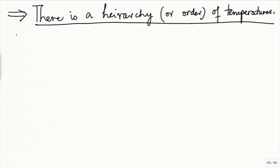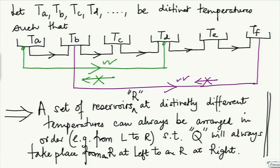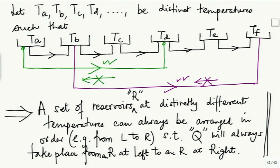Now we come to our definition and convention. This hierarchy is known as the hierarchy of temperatures. We label the temperatures such that temperatures at the left have a higher numerical value than temperatures at the right. Hence we say that the temperatures at the left represent higher or hotter temperatures, and those at the right represent lower or cooler temperatures.